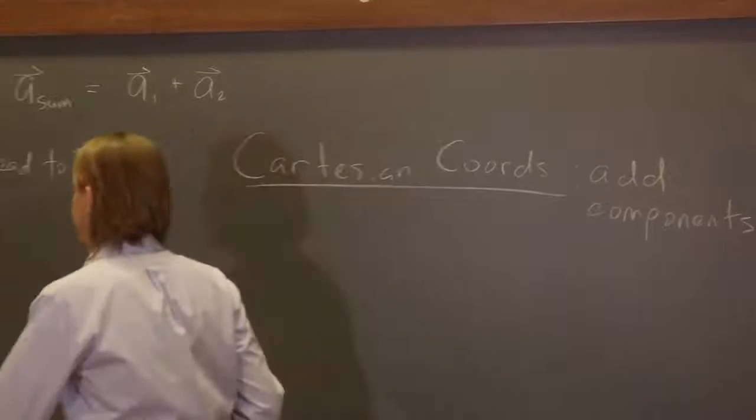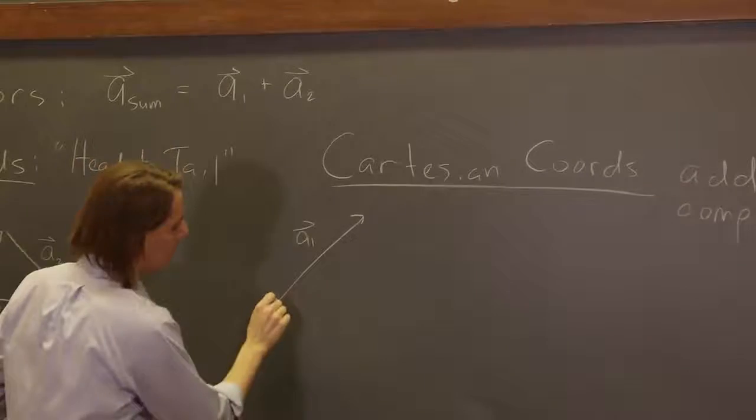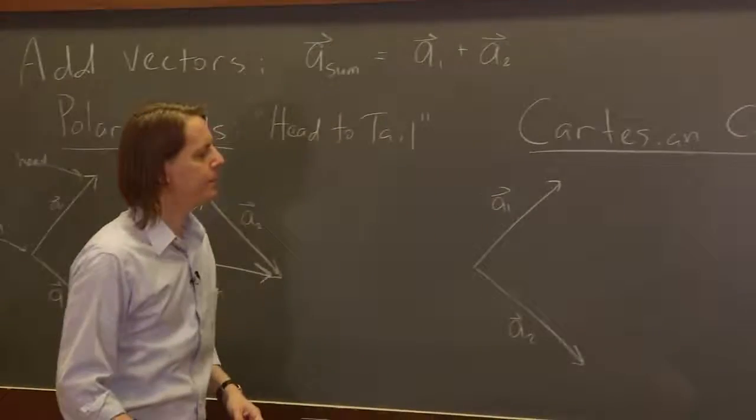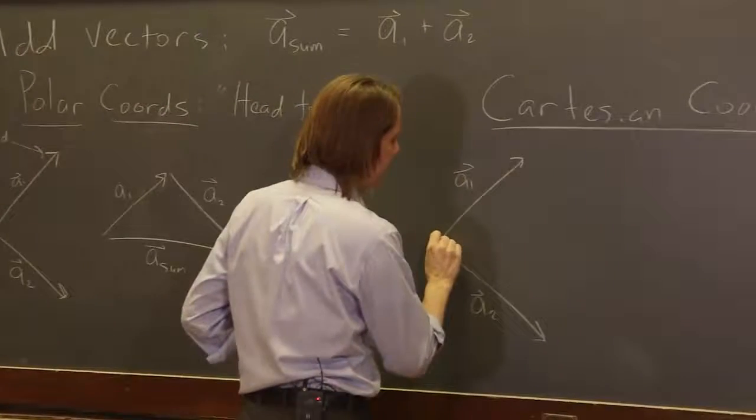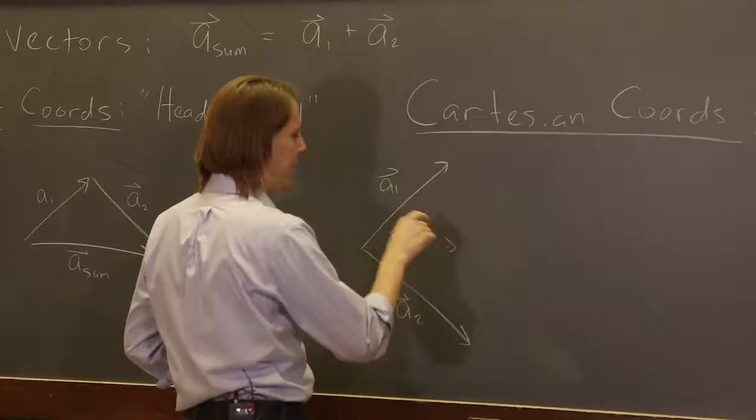So let's take the same two vectors. Here's a1 and here's a2, like that. And you break them into components. You say, okay, here is a1x, and here is a1y.